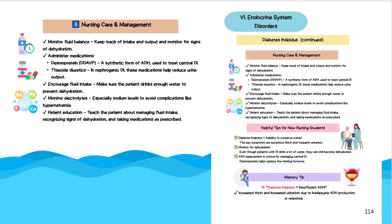Moving on to page 114: nursing care and management. We want to monitor fluid balance — keep track of intake and output and monitor for signs of dehydration. Administer medications: desmopressin or DDAVP, which is a synthetic form of ADH used to treat central DI. Thiazide diuretics for nephrogenic DI — these medications help reduce urine output. Encourage fluid intake to prevent dehydration. Monitor electrolytes, especially sodium levels, to avoid complications like hypernatremia. Patient education: teach the patient about managing fluid intake, recognizing signs of dehydration, and taking medications as prescribed.